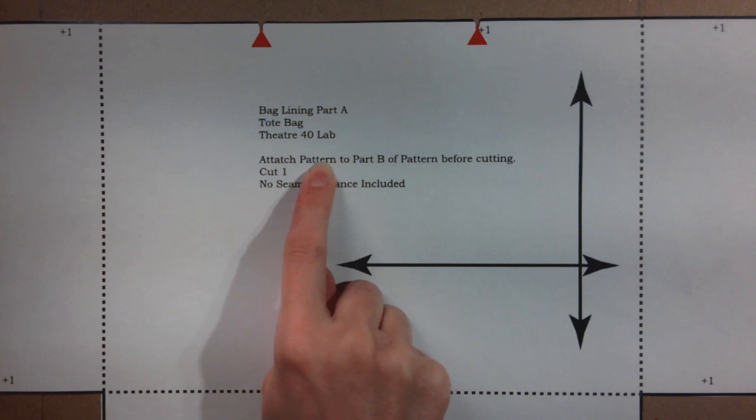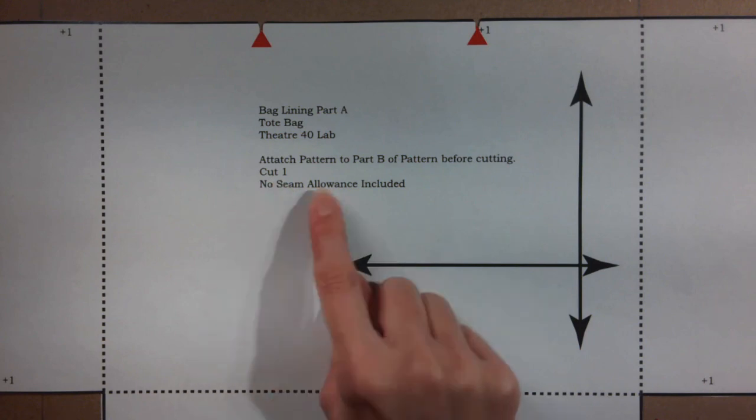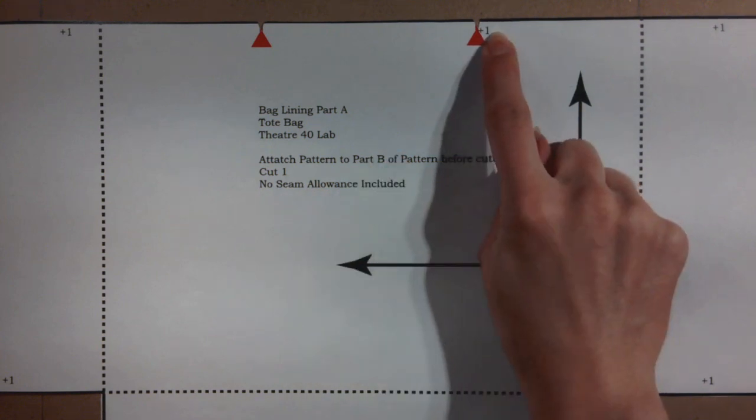The pattern piece lists how many of this piece to cut. And there is a note that no seam allowance is included. This means the pattern does not have the seam allowance. So after tracing, the seam allowance must be added before cutting.